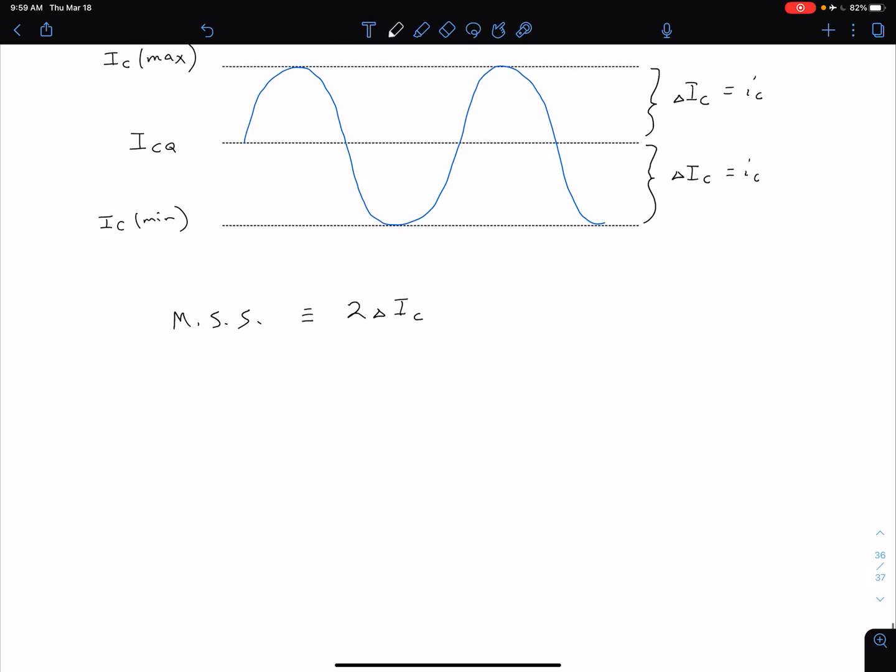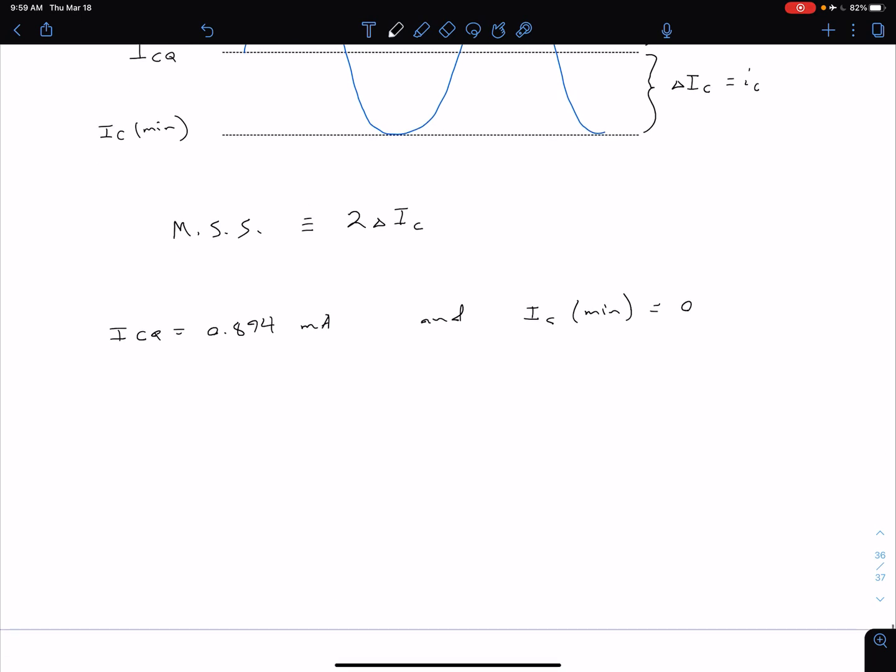As an example, if our ICQ is maybe equal to 0.894 milliamps, and we have some IC min, so maybe we only have information about our IC min and we know that our IC max is not going to drive the device into saturation. If IC min is zero, then we could say max change in IC is just going to be delta IC equals IC equals 0.894.